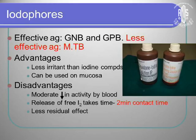Some of the chemical disinfectants used: one is iodophors, which is an intermediate-level disinfectant. It is less effective against Mycobacterium tuberculosis. The advantage is that it is less irritating than iodine compounds. You have to give a two-minute contact time — that is why povidone-iodine drops are used to disinfect the ocular surface and left for about two to three minutes.